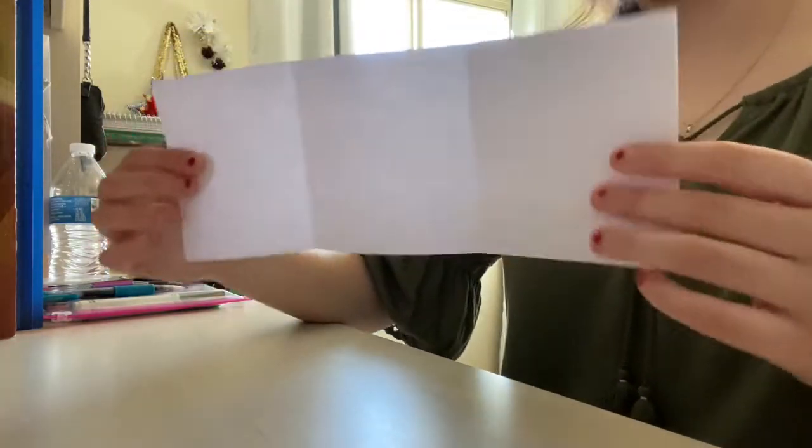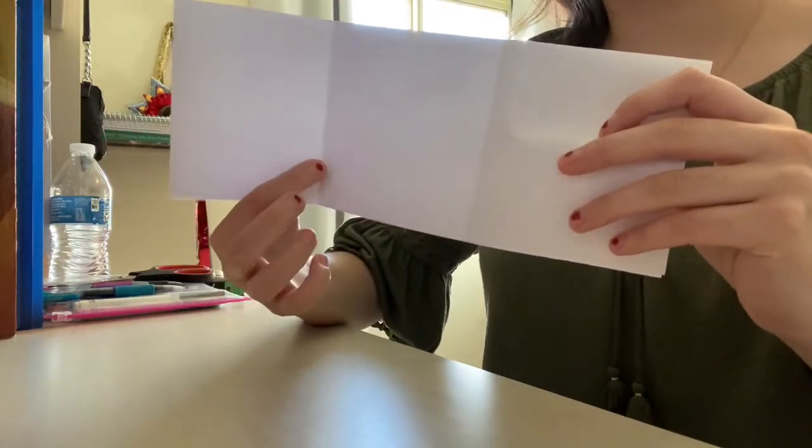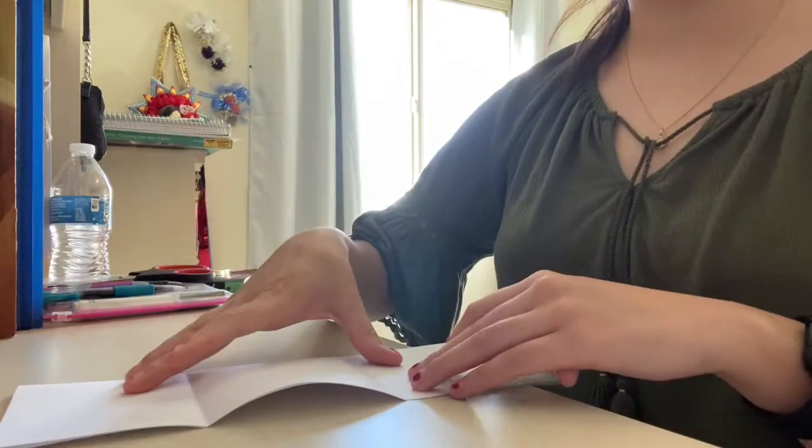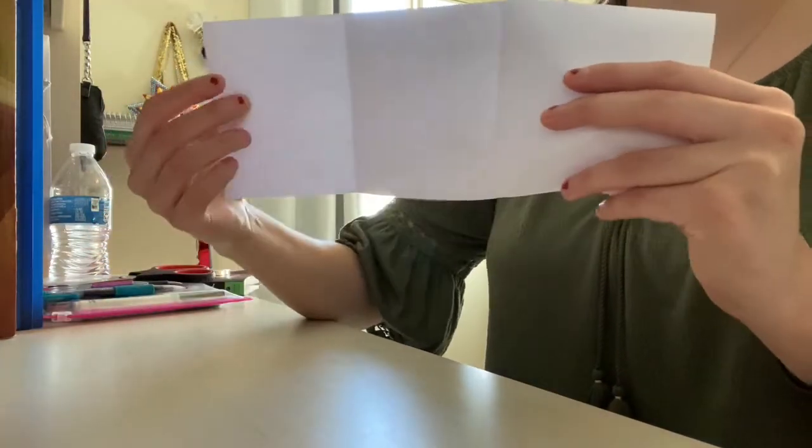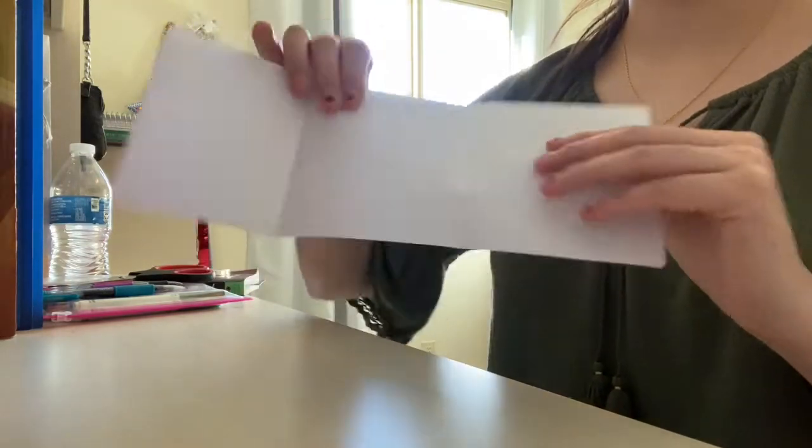And once you take it apart, you open it and you should have six sections. Don't cut the creases yet because you're going to want to write on this and you'll find that it's a little bit difficult to write on it when it's moving.